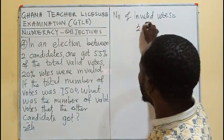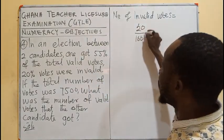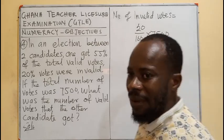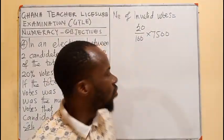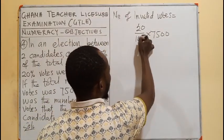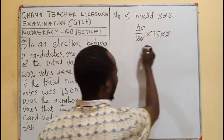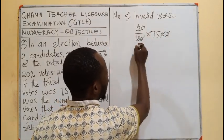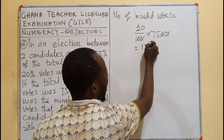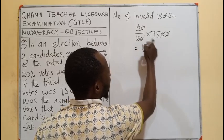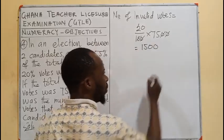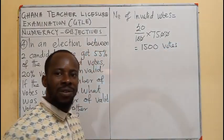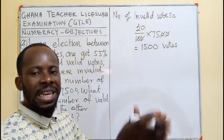That 20% means 20 over 100 times 7,500. The 100 cancels, and 2 times 75 would be 150, with a zero — meaning we have 1,500 votes that were invalid.